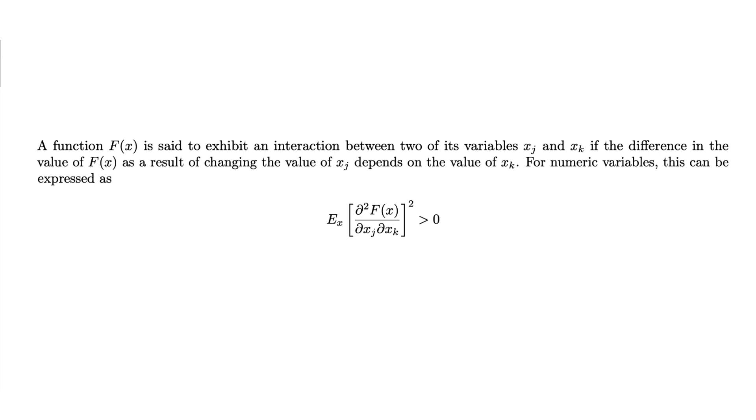But what if we want to understand the joint PDP of the two features? If there's no interaction, the joint PDP will be additive. For a given instance, we could simply add its value from the car age PDP to the value from the car type PDP, provided we then center the joint PDP. This property comes from the definition of an interaction: if there's no interaction, changes in the prediction with respect to car age will not depend on the value of car type, and vice versa.